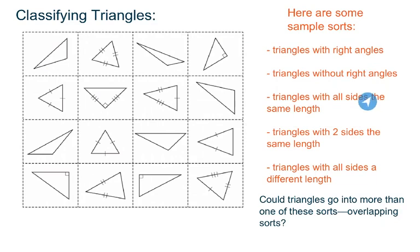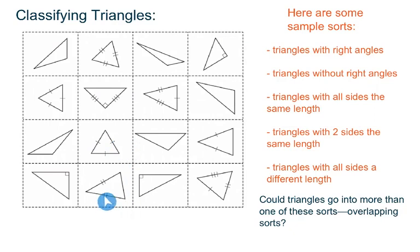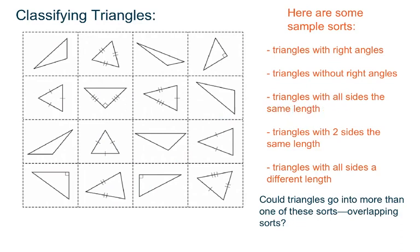I could do triangles with all sides the same length. When you see these hash marks — these little tick marks — one single mark on each side means those are all the same length, versus two marks meaning two sides are the same length but the third is not. So if I'm looking for triangles with all sides the same length, I'd need all sides marked with the same number of tick marks. So I've got this one, this one, and this one.